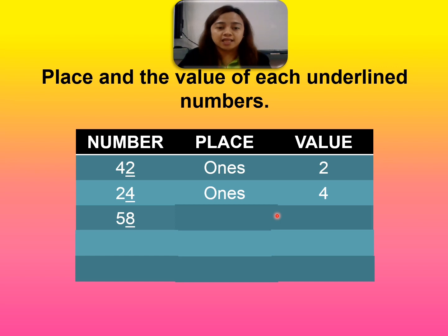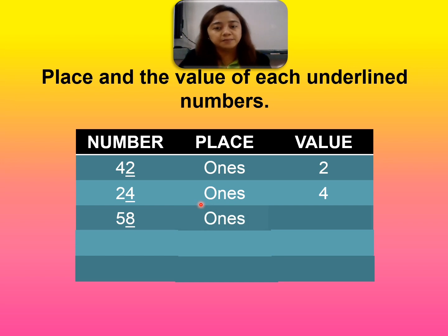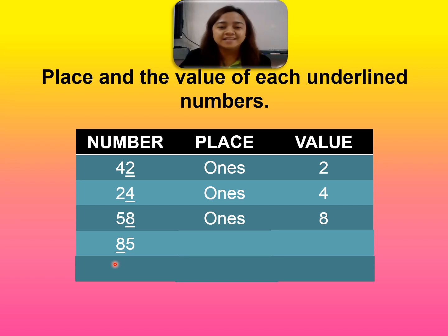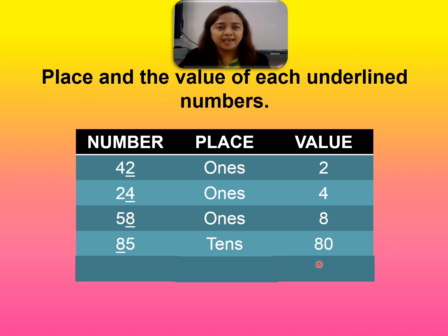Fifty-eight. The underlined number is eight. So the place is ones, and the value is eight. Eighty-five. The underlined number is on the left, which is number eight. On the left it's the tens, so the place is tens. And the value is eighty.